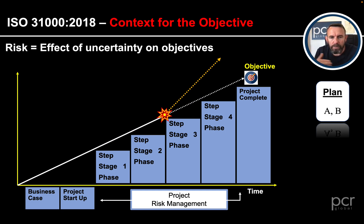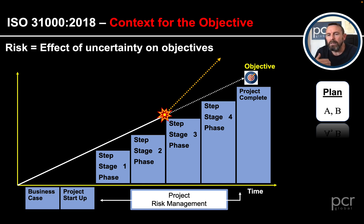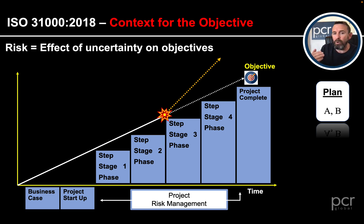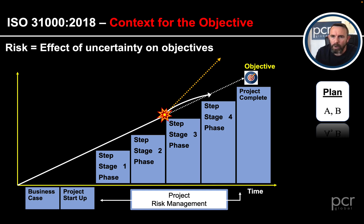Going along the timeline, we come to Stage 3 and we hit a risk. This could be positive or negative — it looks negative here — but what it does is create a deviation from the expected. An effect is a deviation, positive or negative. What we're showing is we've hit one of those deviations and it has set us off on a tangent away from the objective. What we need risk management to do is get us back on to our objectives either way.